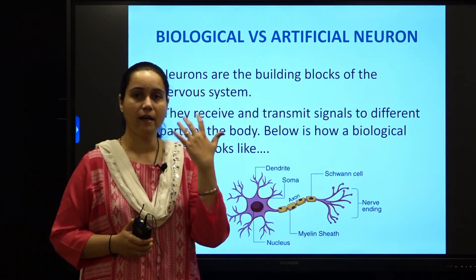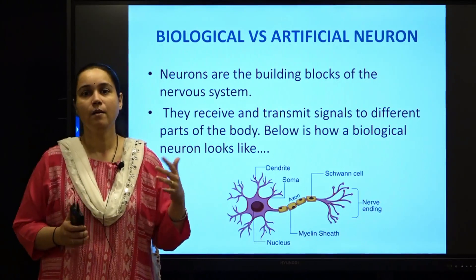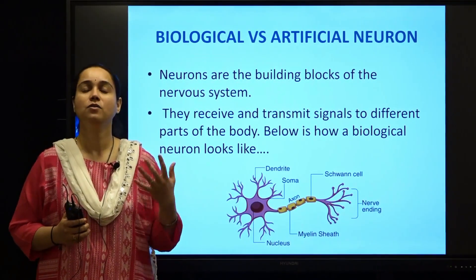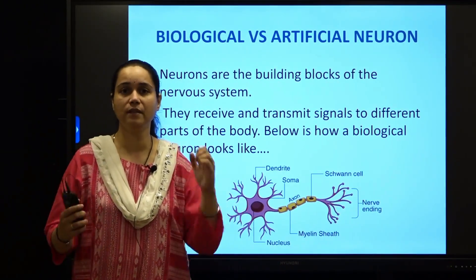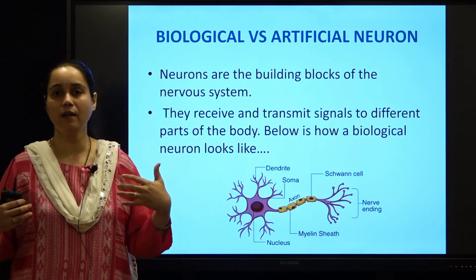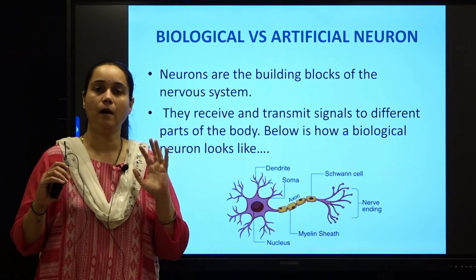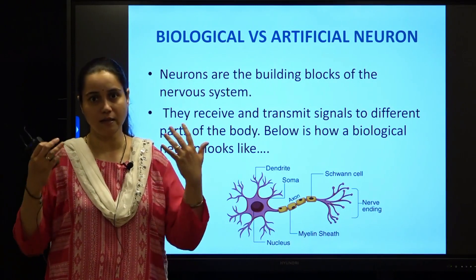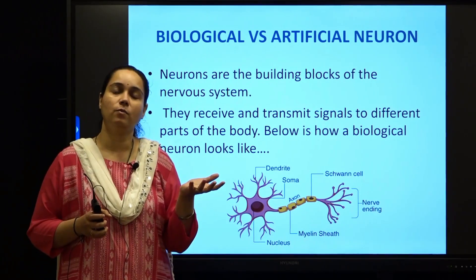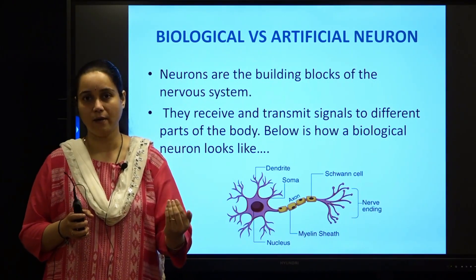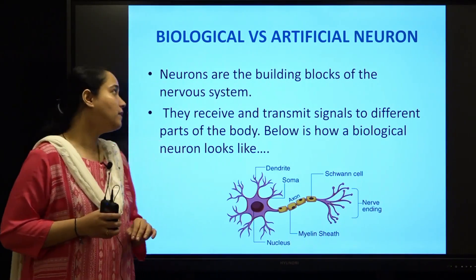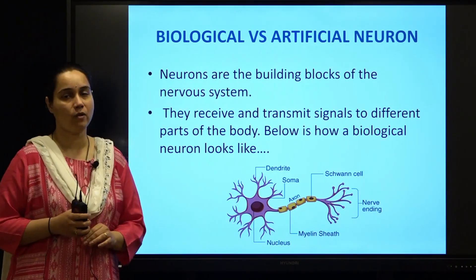We all know that our body is entirely controlled by the brain. Brain is nothing but an interconnection of several millions of neurons together. All these neurons trigger and activate some of the other body parts and they help to manage and control our body. It helps to coordinate all the parts and functions of our body and thus how our human body is controlled by the brain. Artificial neural networks are also inspired by this strategy of working of our biological neural system.